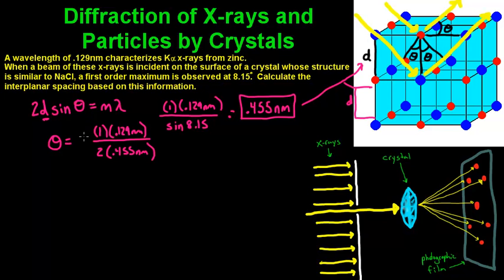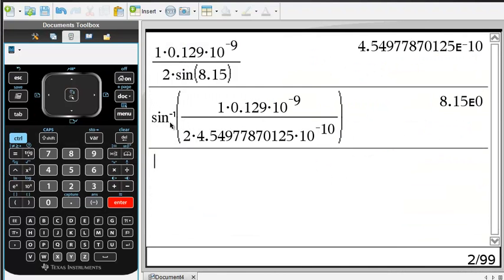And then you're going to throw the sine over, but when you do that, it's going to become the inverse, so all you have to do is do that inverse of sine, which is sine negative 1. And when we do that, sine negative 1 times 1 times our wavelength divided by 2 times the distance is going to give us theta, 8.15, which is what we had.